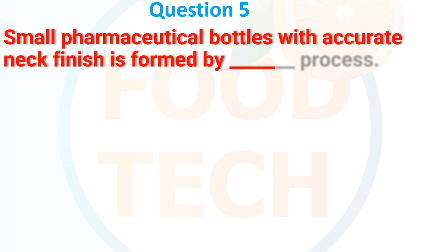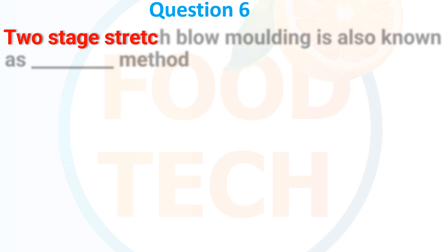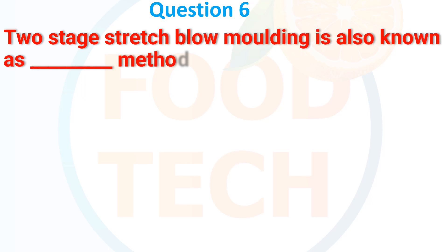Smaller pharmaceutical bottles with accurate net finish are formed by which process? (a) Calendaring, (b) Injection blow molding, (c) Extrusion blow molding, (d) Rotation molding. The answer is (b) Injection blow molding.